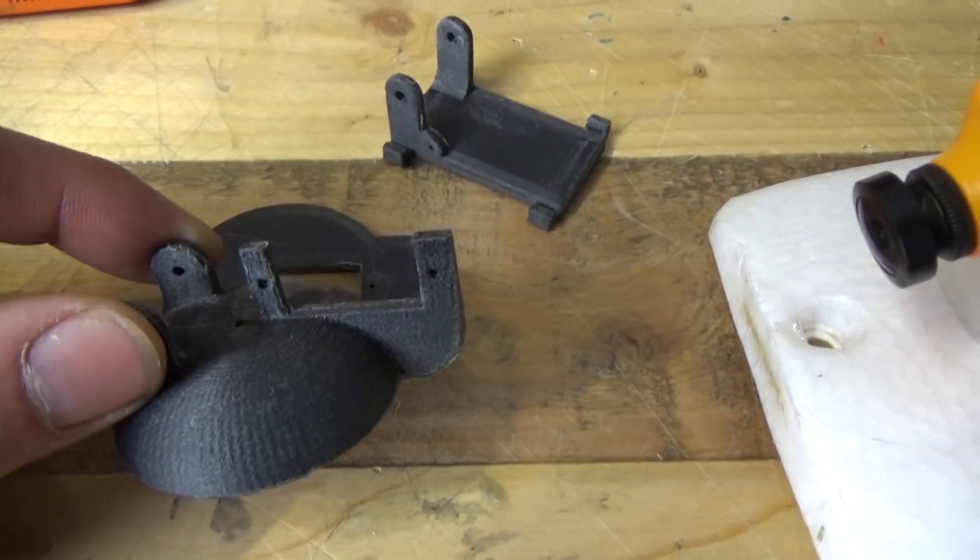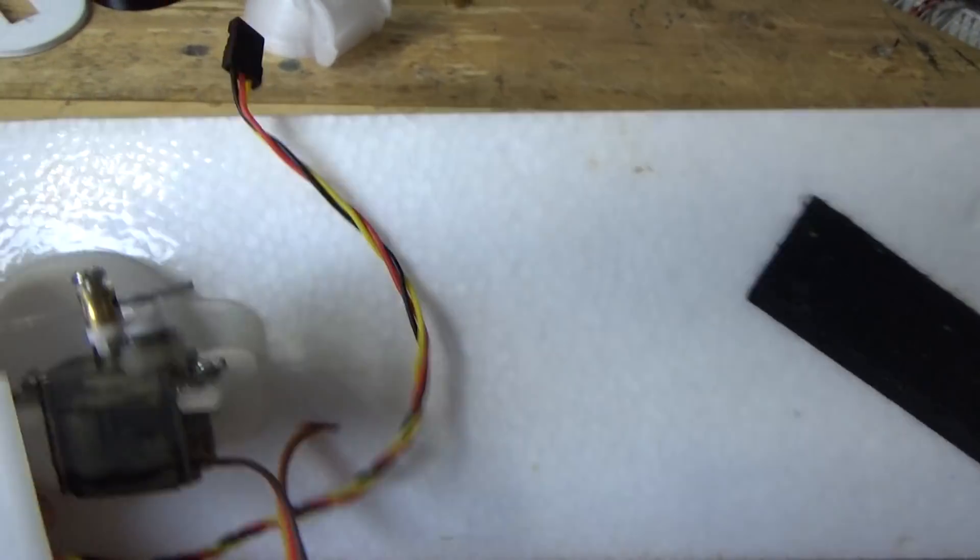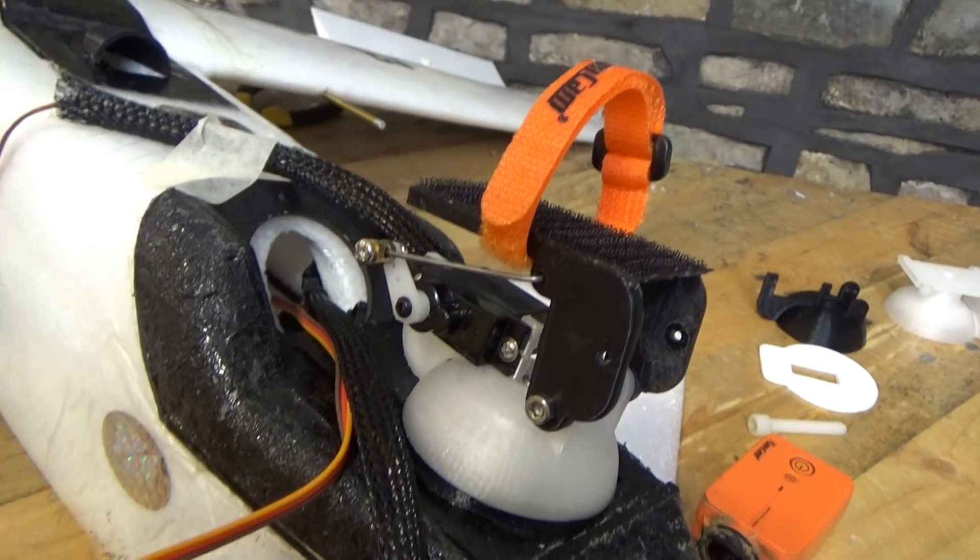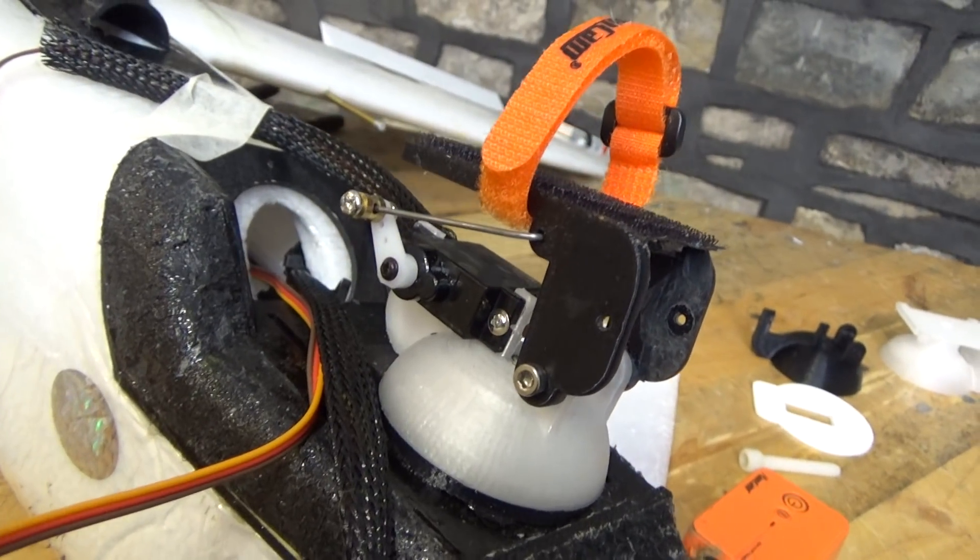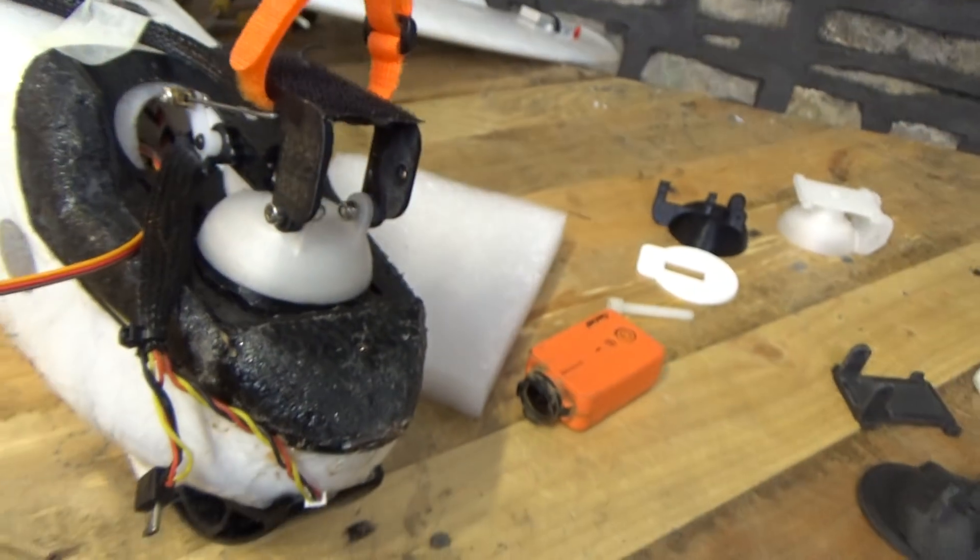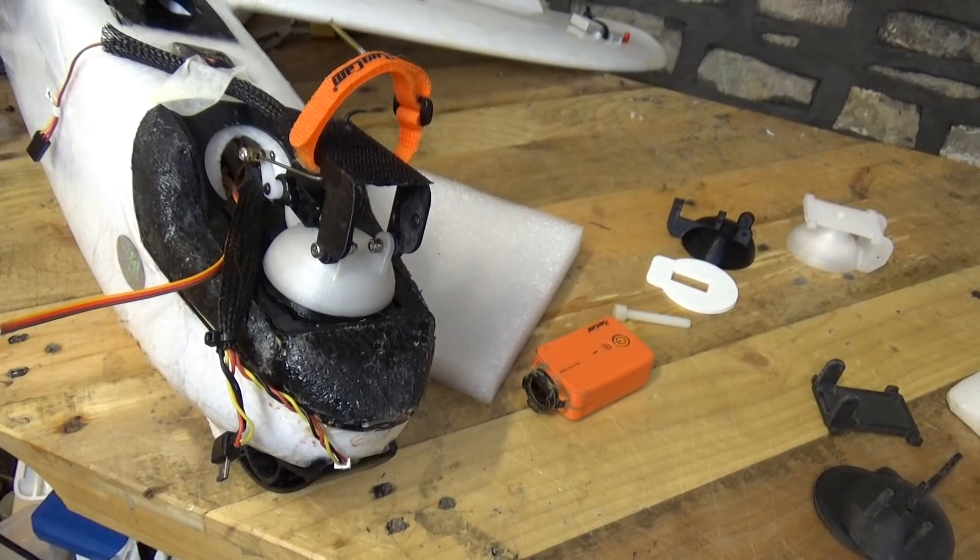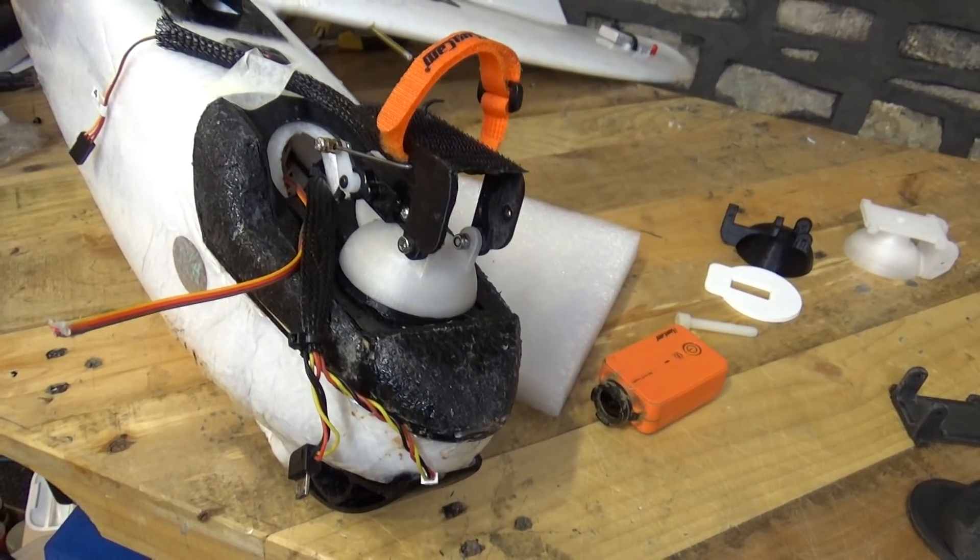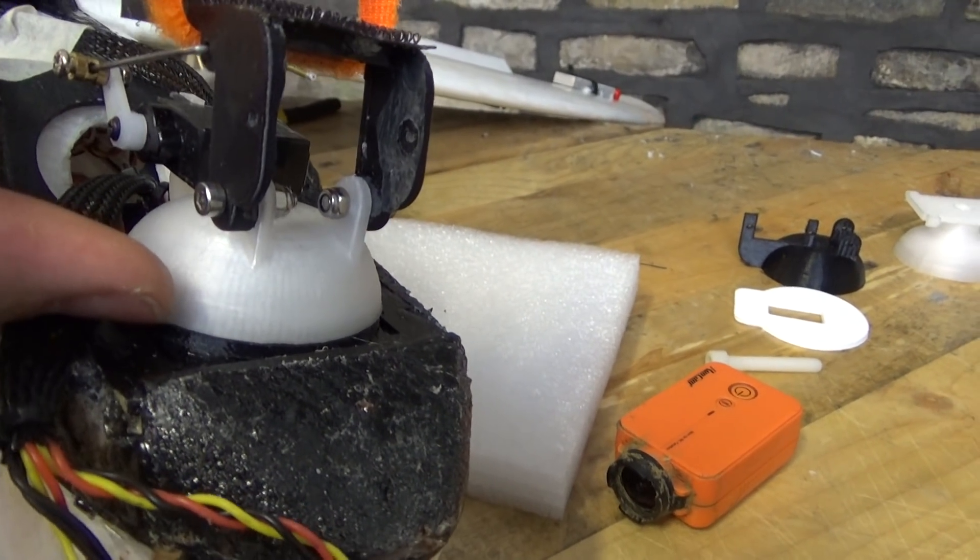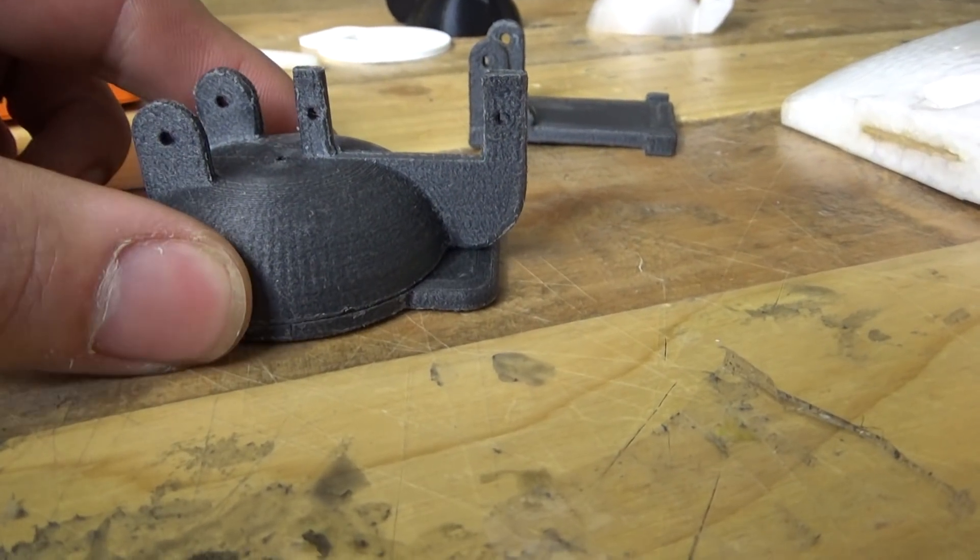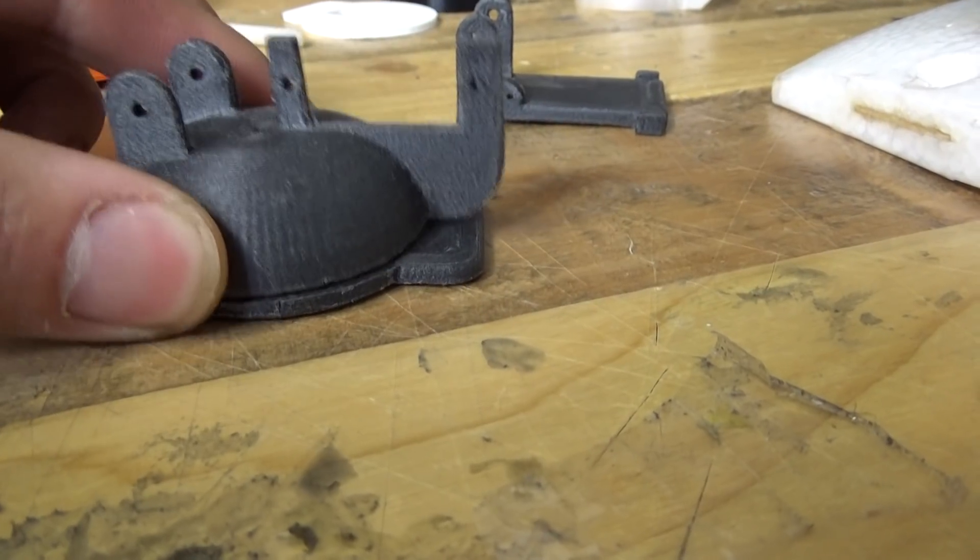And then what you do is you mount a servo in this gap here, which we can see in action just down here. I would strongly suggest putting a metal geared servo in for these servos. And the reason for that is that as I learned from my Mini Talon, it's a hell of a whack, and I mean a really big whack. And you will notice there is little to no room gap between the dome and the base plate. And that's another big tip for you, make sure it's almost a friction fit between these two pieces, and then that will stop this rocking backwards and forwards.